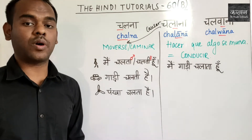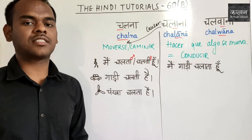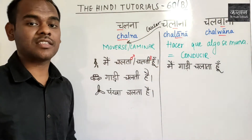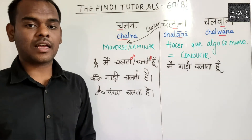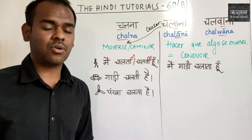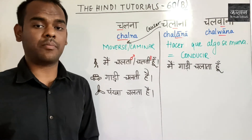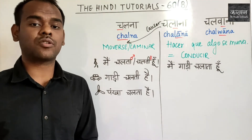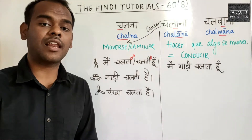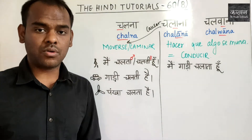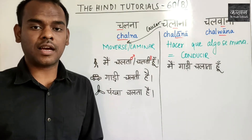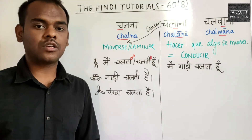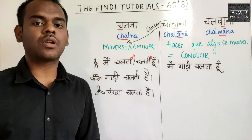El siguiente verbo es chalana. Chalana significa causar que algo se mueva, es decir, conducir. Por ejemplo, yo estoy conduciendo un carro — estoy haciendo que el carro se mueva. En hindi, yo diría: yo conduzco un carro.